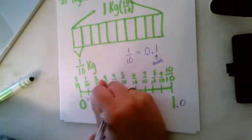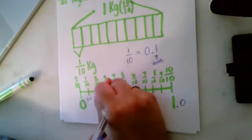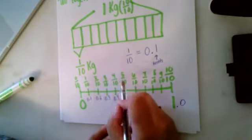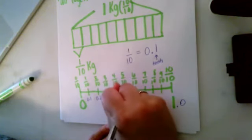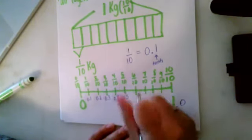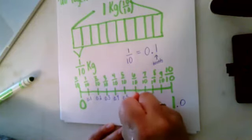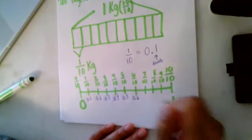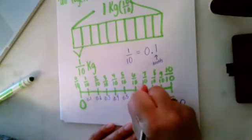Four-tenths, 0.4. Five-tenths, 0.5. Six-tenths, 0.6. Seven-tenths, 0.7.